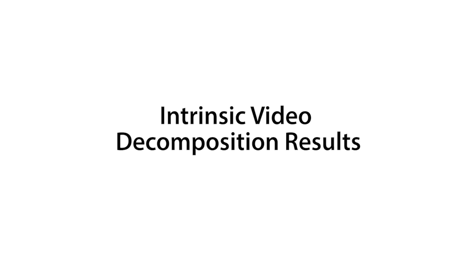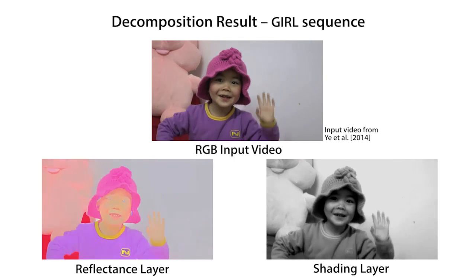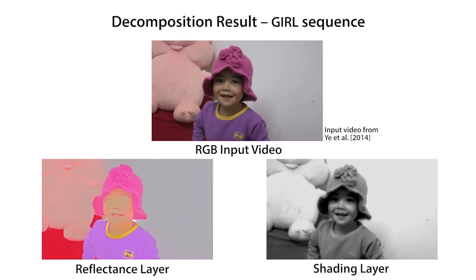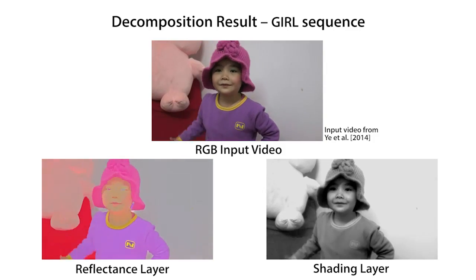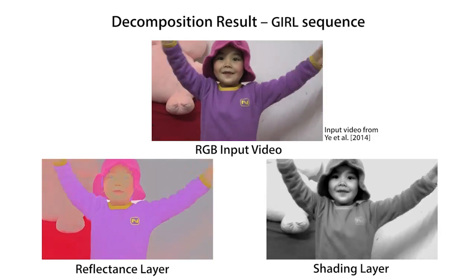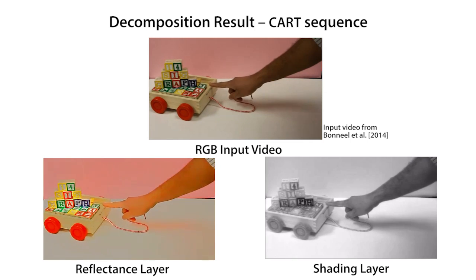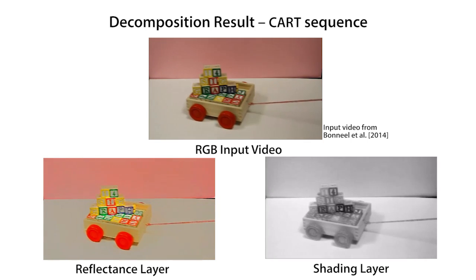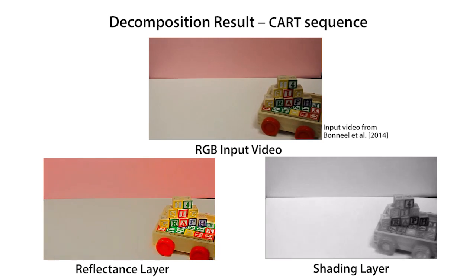Here we show some decomposition results obtained with our approach. In this sequence, our method successfully decomposes the shadows on the wall and under the hut. The colors of the blocks are consistent in the reflectance layer and the wheels are decomposed well in spite of the motion blur.